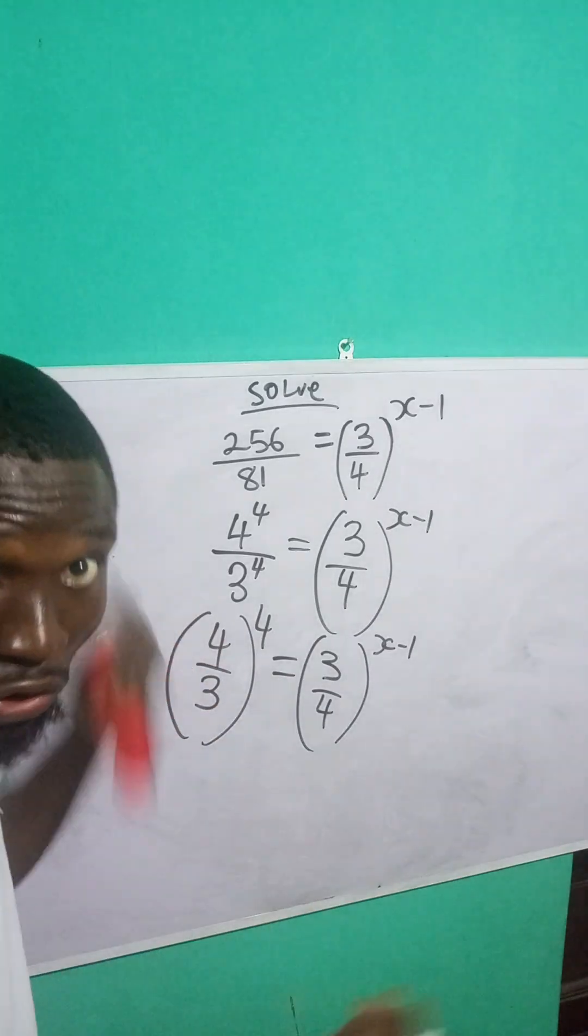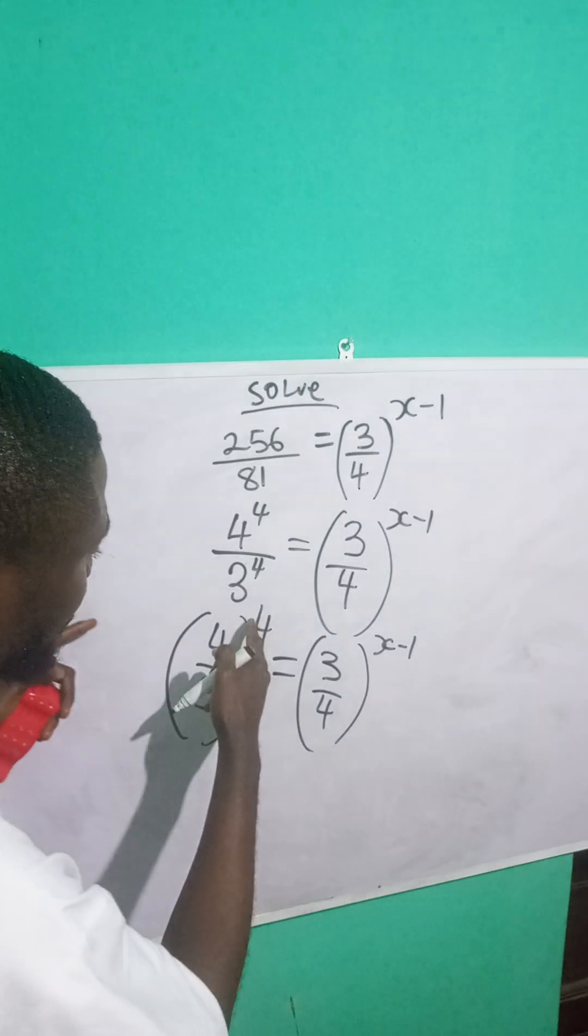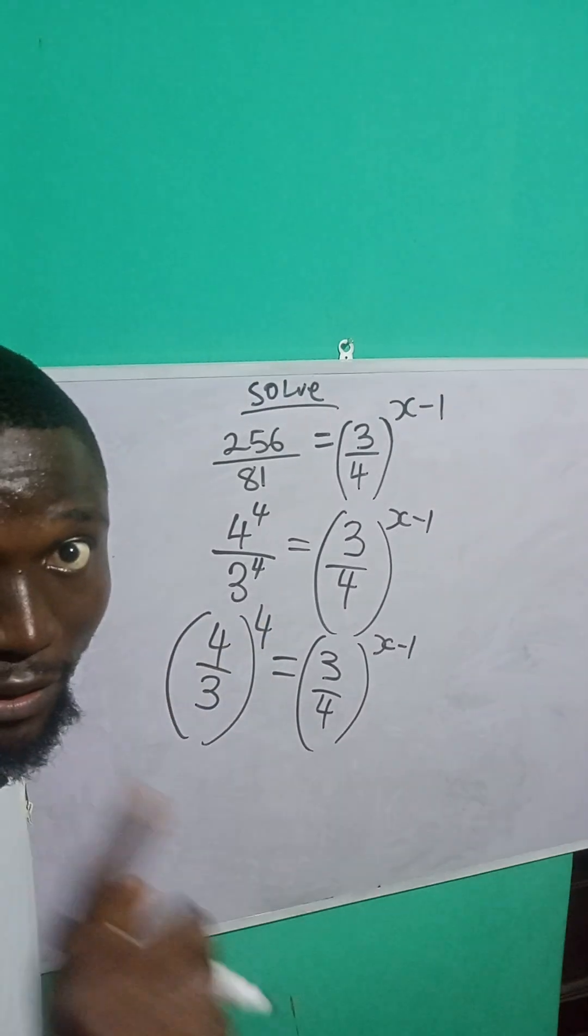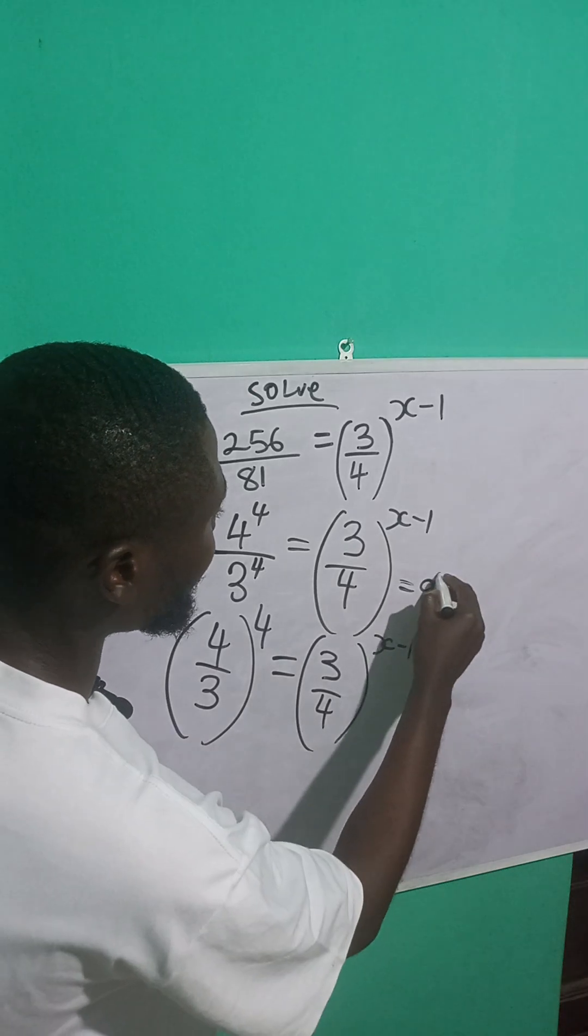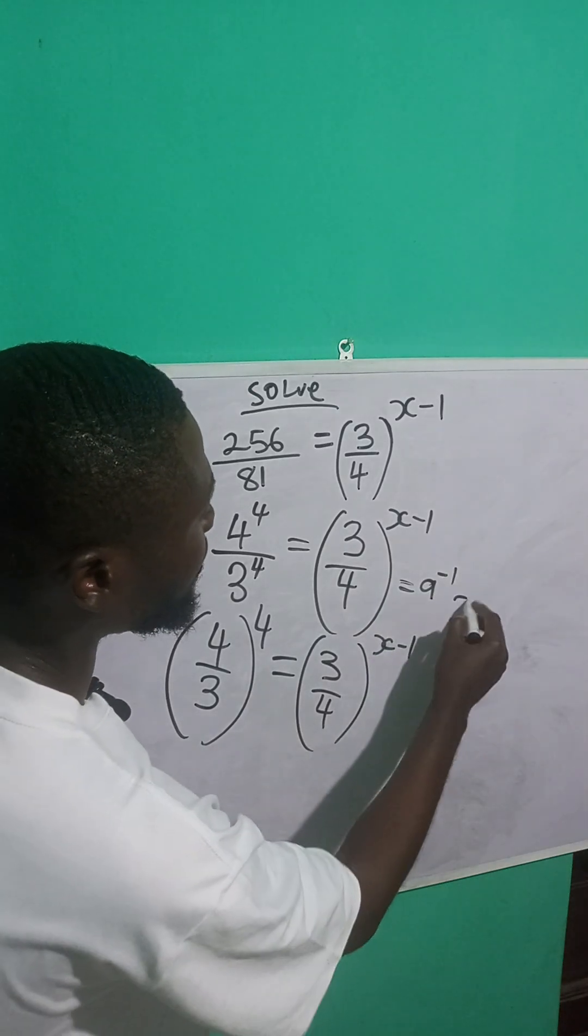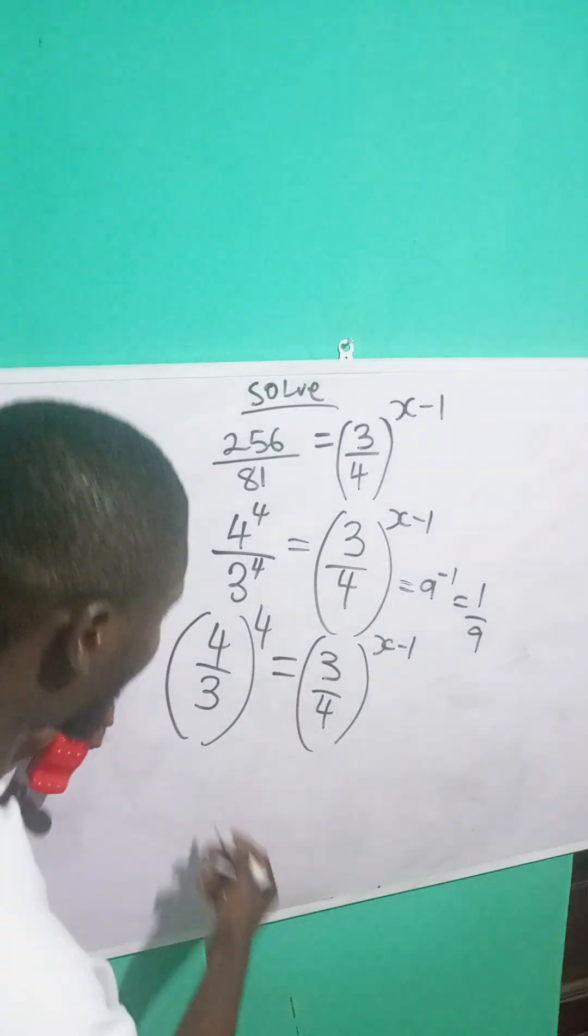If I take the inverse of this, I will turn it upside down to become 3 over 4. If it becomes 3 over 4, I will put a minus sign here. For instance, if you have a raised to power minus 1, this can be written as what? 1 over a. In so doing, you are taking the inverse. So I am going to do the same here.